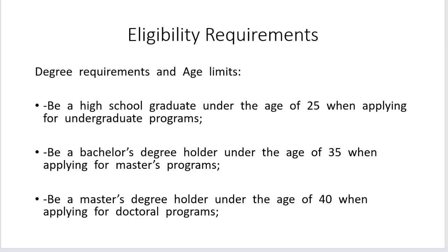Now let's talk about eligibility requirements — degree requirements and age limits. If you want to apply for the undergraduate program, you must have your high school graduate degree and must be under the age of 25. For the master's degree program, you must have your bachelor's degree and must be under 35. For the doctoral degree program, you must have your master's degree and must be under the age of 40.